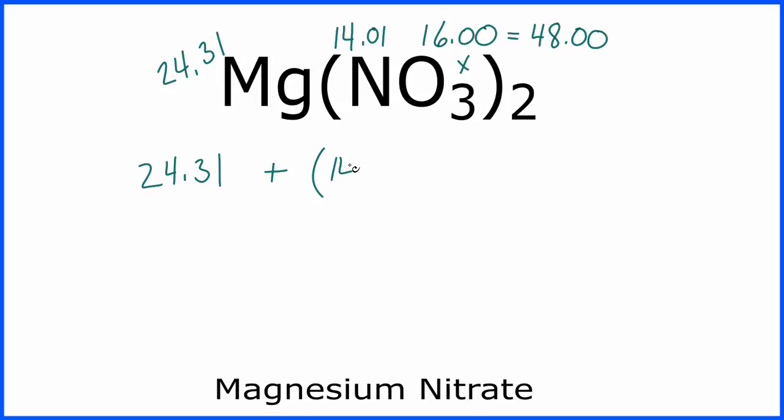So 14.01 plus our 48.00, and then we'll multiply everything in here by two, because this two applies to the entire NO3. So I'll take these two numbers here, and 14.01 plus 48, that would be 62.01.